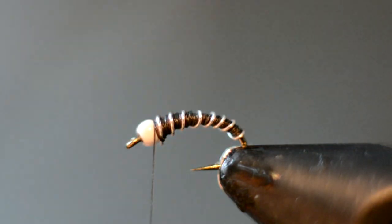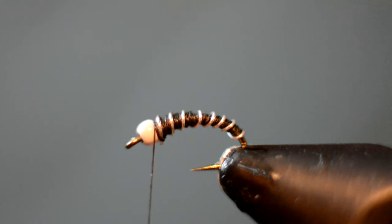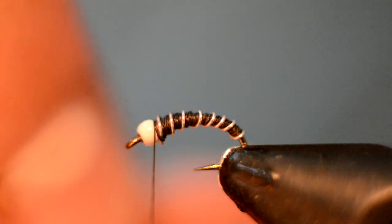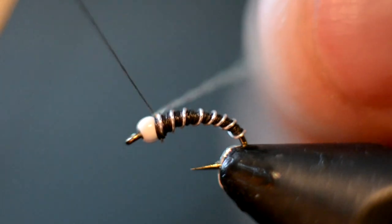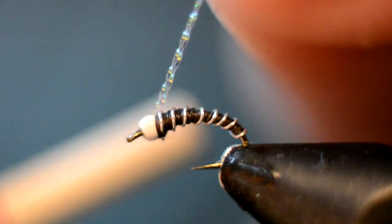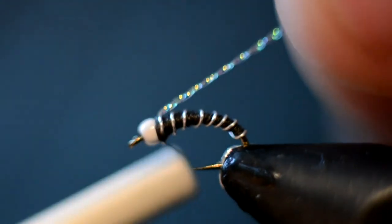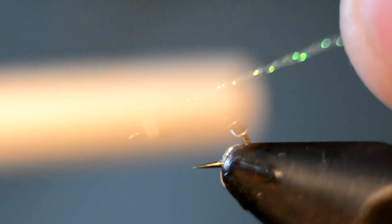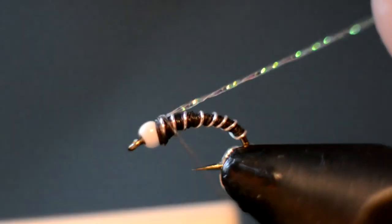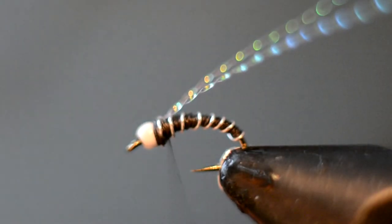So the last step is just a little crystal flash wing. This is the micro flash crystal flash. I take a piece longer than what I need and just wrap it around the thread, double it over, and fix it up so it's sitting right on top of the body. We'll go ahead and whip finish.